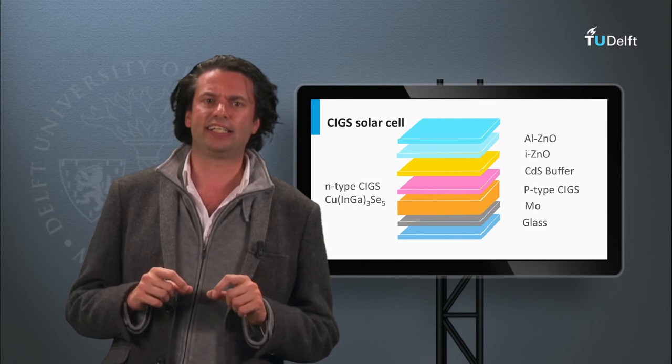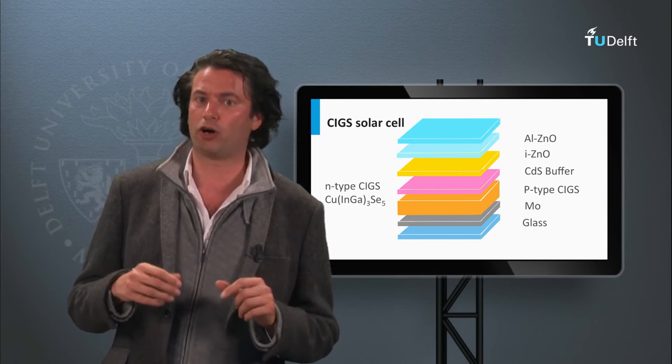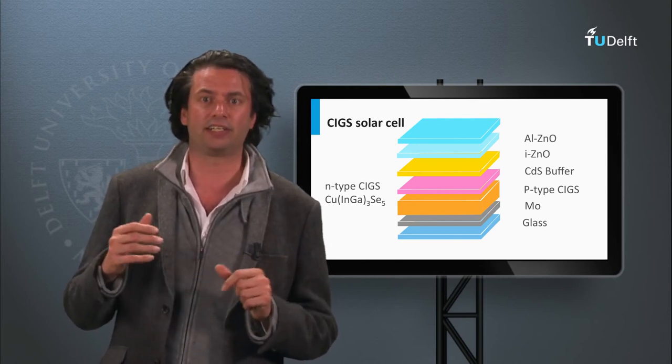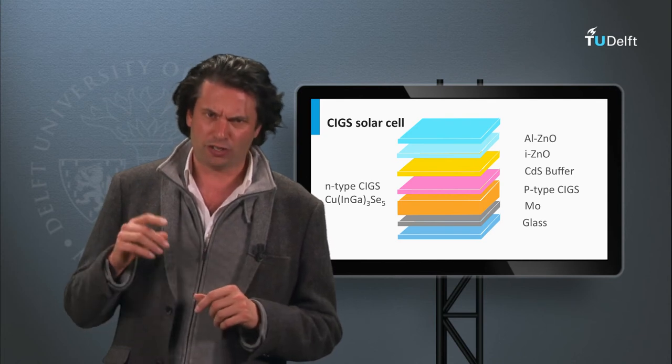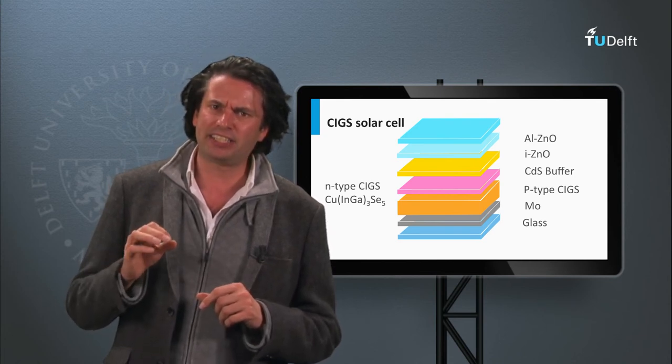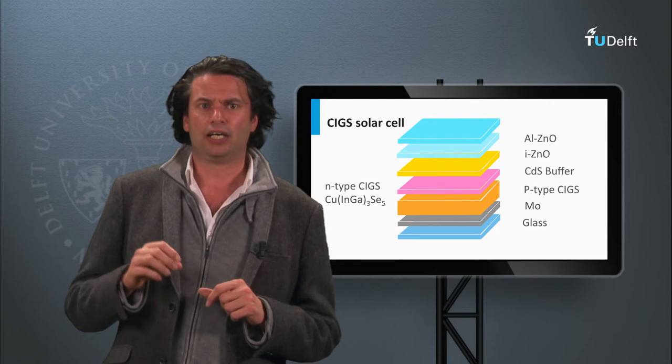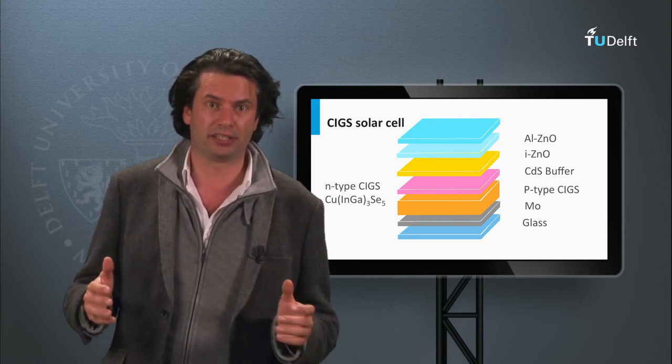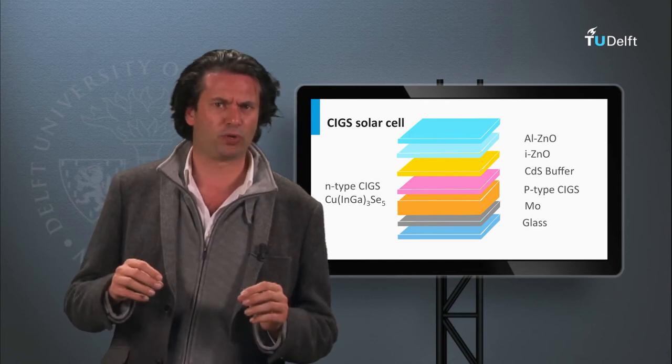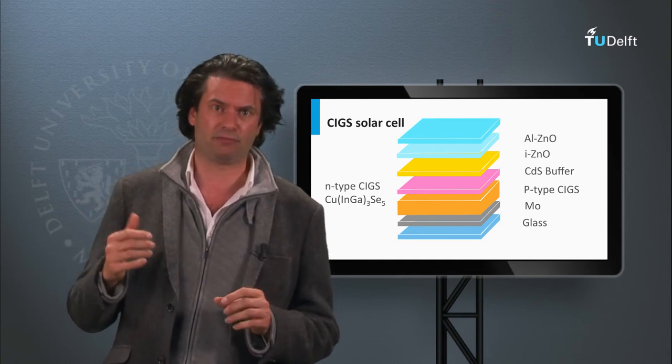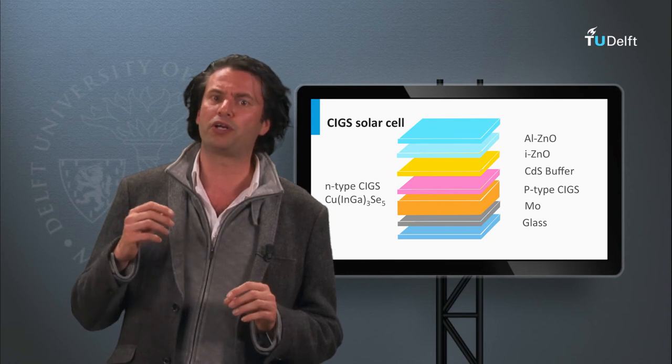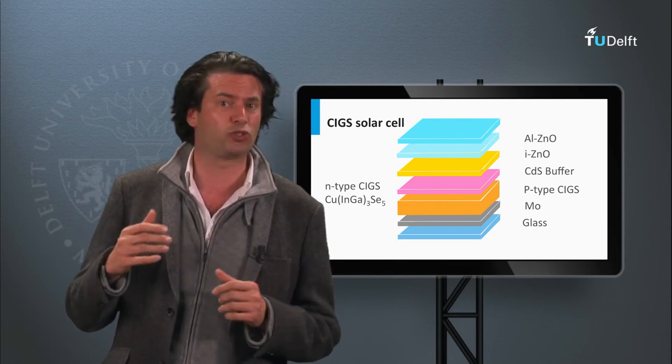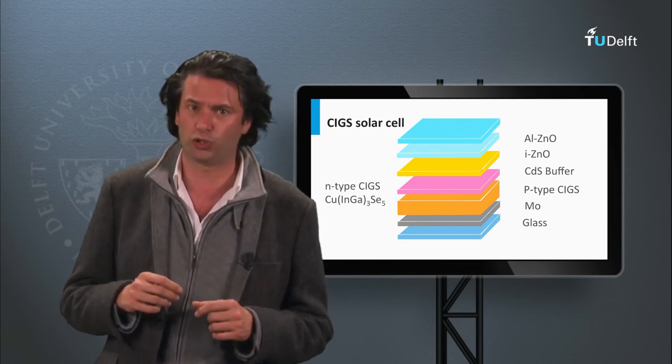The n-type CIGS is an indium-rich alloy like copper indium gallium selenide. In copper-deficient p-type CIGS materials, the dominant recombination mechanism is Shockley-Read-Hall recombination in the bulk. In contrast, in copper-rich CIGS films, the Shockley-Read-Hall recombination at the CIGS cadmium sulfide interface becomes dominant.